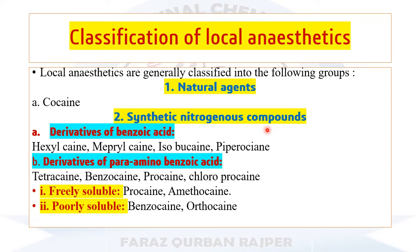For example, one class is the derivatives of benzoic acid. Local anesthetics like piperocaine, isobucaine, ephrylcaine, and hexylcaine belong to this class, meaning their structure has the benzoic acid ring nucleus. Another example is the derivatives of para-aminobenzoic acid, meaning they have a para-position amino group — that is, a 4-amino group — in their benzoic acid structure.